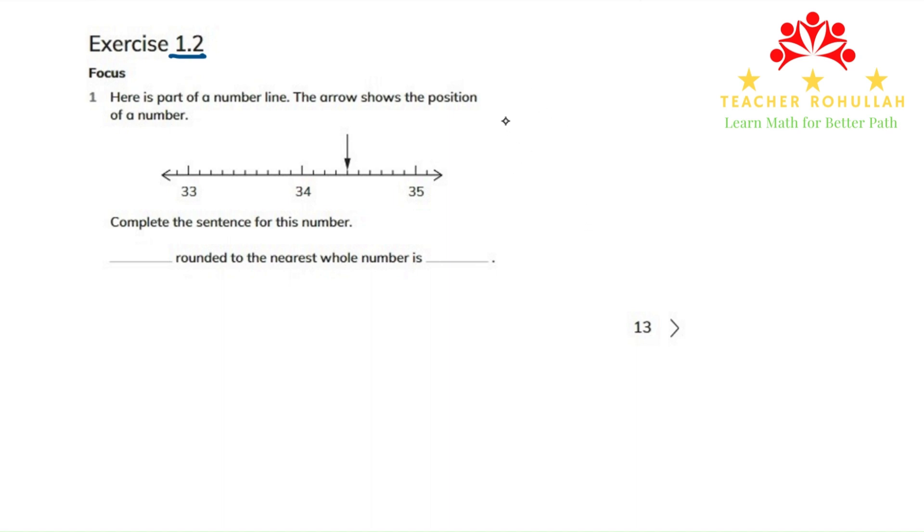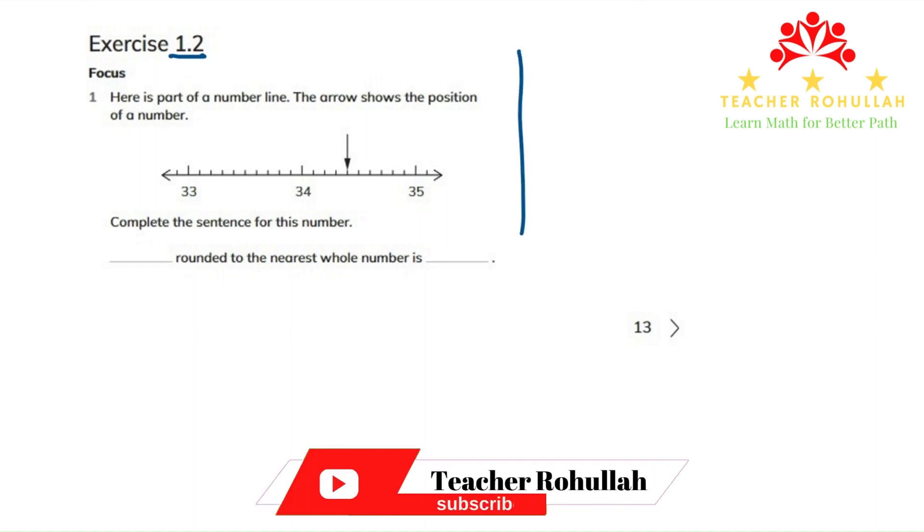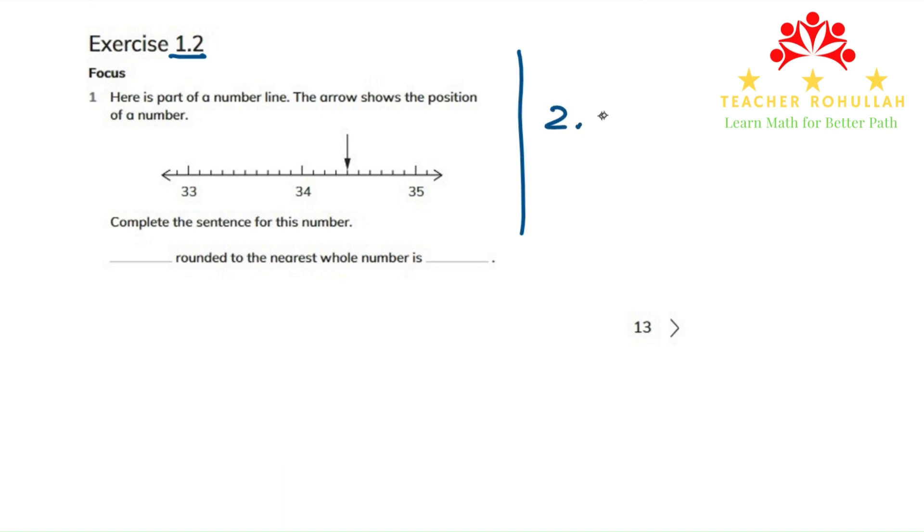Before starting, I will give some hints about how we can round to the nearest whole number. If we have a number like 2.6, the nearest whole number here is 2, and the digit that we have to compare with 5 or 4 is 6. 6 is in the tenths place. If the tenths place is 5 or more—5 or more means 5, 6, 7, 8, and 9—we round up.